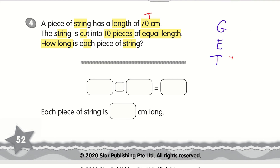I already have my total. And the string is cut into 10 pieces — that means there are 10 pieces of the same length, so 10 is actually the group. Now they want us to find out how long each piece of string is, so E is what we need to find — we are not sure of what each is. We know the total and we know the group.